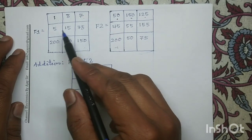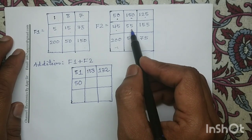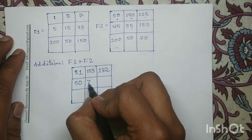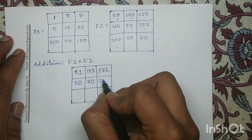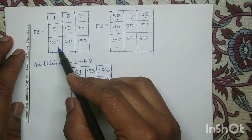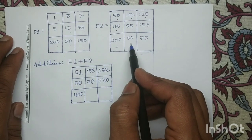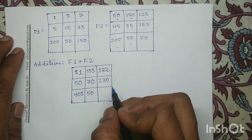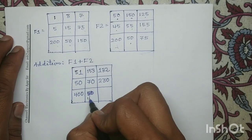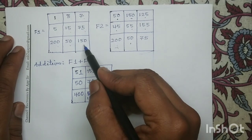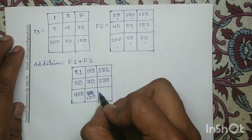Addition of pixel value 5 with pixel value 45 gives 50. Addition of pixel value 15 with pixel value 55 gives 70. Addition of pixel value 75 with pixel value 155 gives 230. Addition of pixel value 200 with pixel value 200 gives 400. Addition of pixel value 50 with pixel value 50 gives 100. Addition of pixel value 150 with pixel value 75 gives 225.